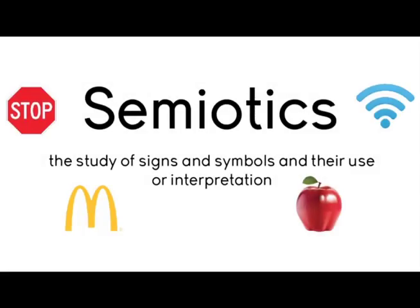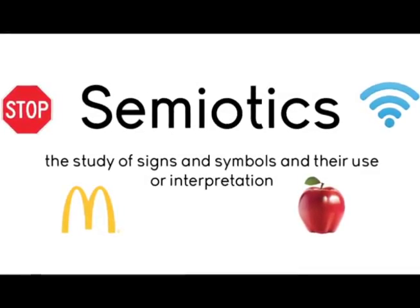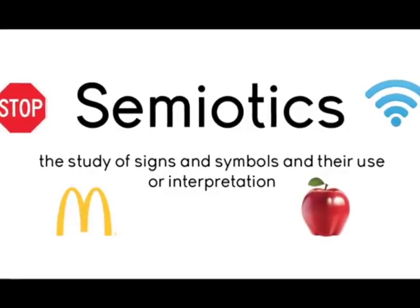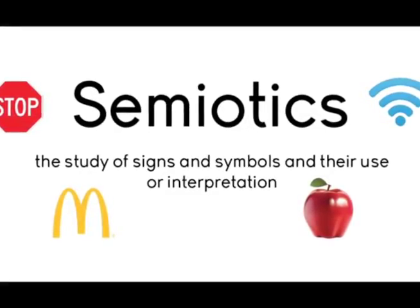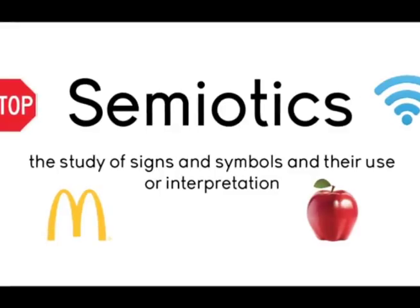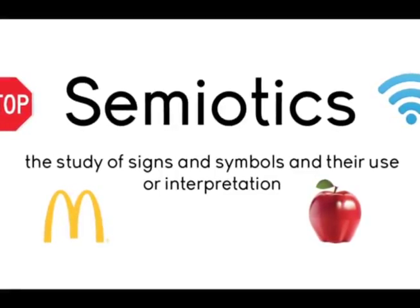When looking at how semiotics is used in advertising, the goal is to understand how to interpret the symbols and signs that we see to understand the advertiser's message. A simple way to do an analysis of an advertisement using semiotics is to look at the visuals, audio, and text, and decide which elements are the signifier and interpret what is signified by them.